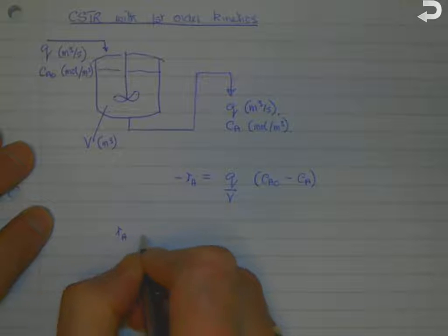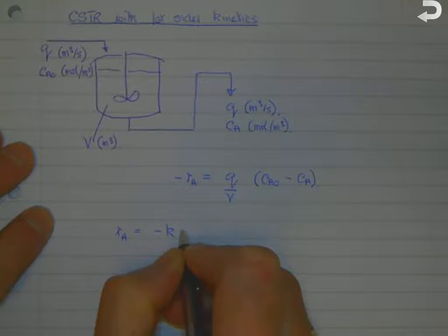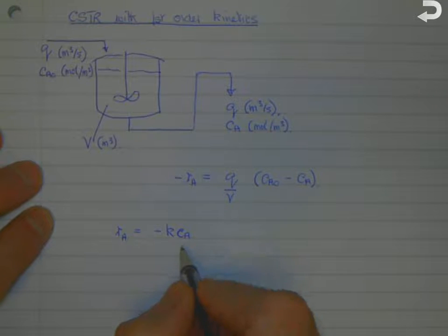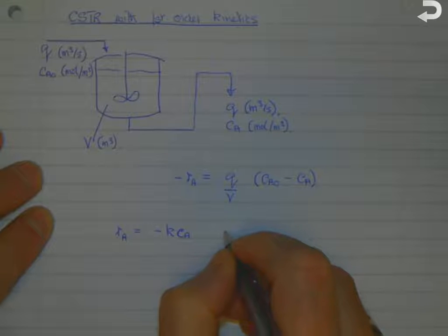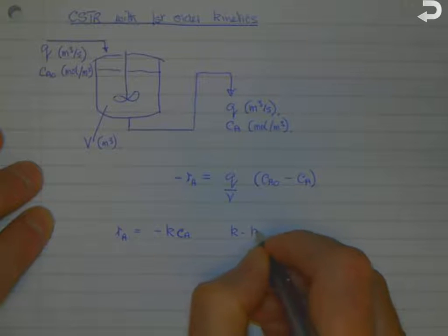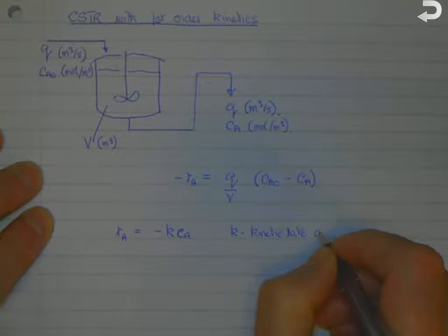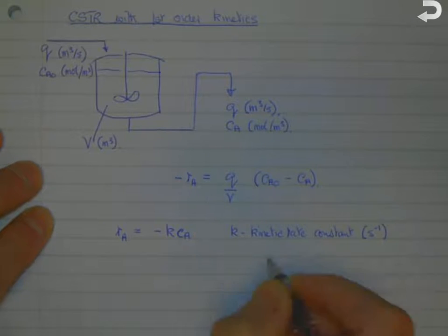If we have first-order kinetics, then rA = -kCA. It's minus because A is being consumed by the reaction, where k is the kinetic rate constant. Because it's first order, k has units of seconds to the minus one.